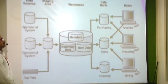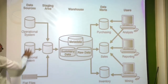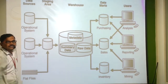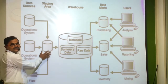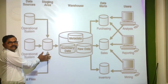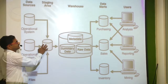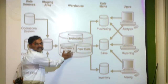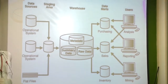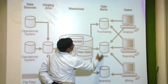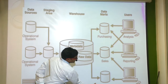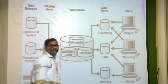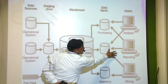Another view of data warehousing: data is available from different sources. It passes through what we call the staging area, also known as ODS — operational data storage. In the staging area, data cleaning, summarization, and checking occur. After that, it is sent to the data warehouse, which is non-volatile — we cannot delete the data, but we can perform operations on it. Then it is sent to data marts: purchasing data mart, sales data mart, and inventory data mart. After that, it is sent for analysis, reporting, and mining using visualization techniques.